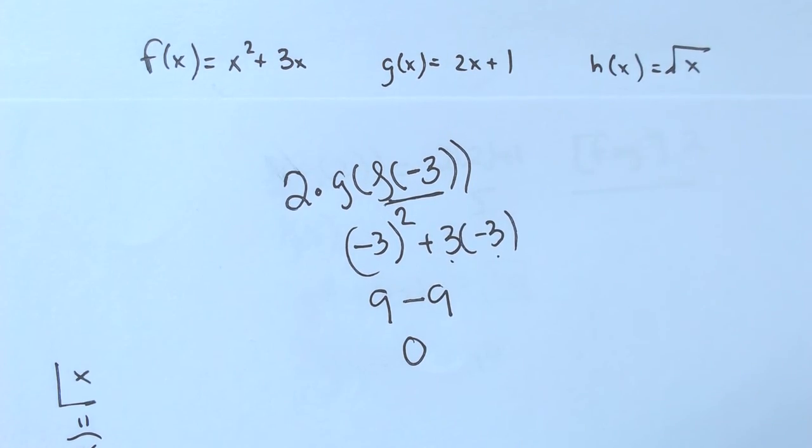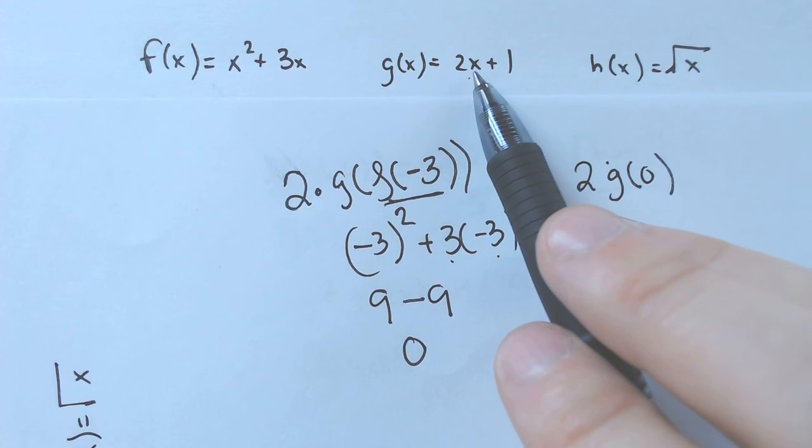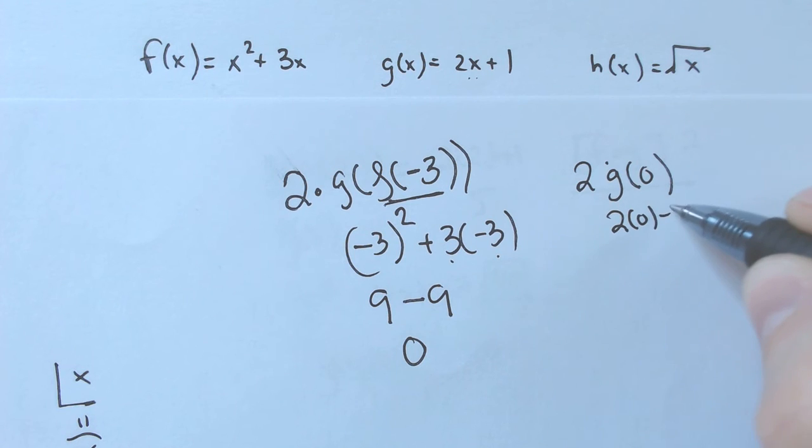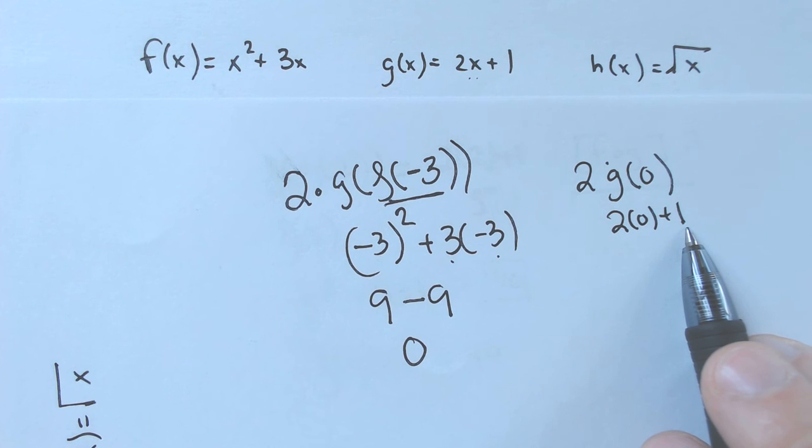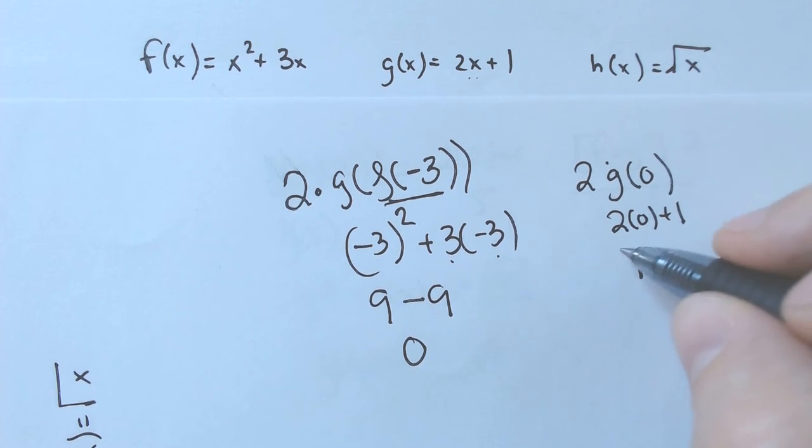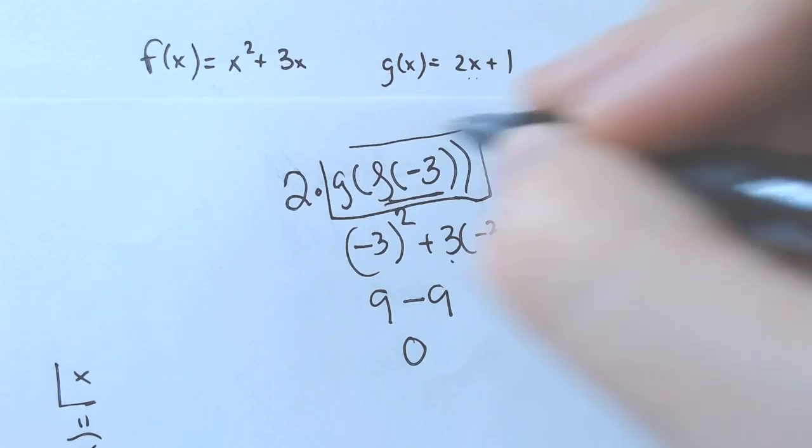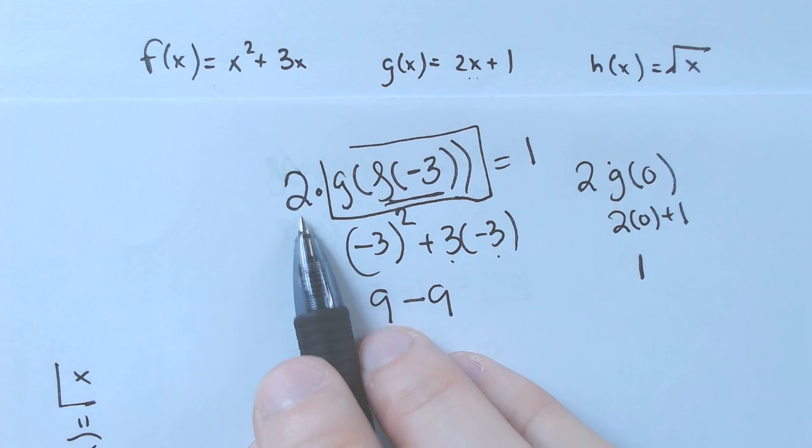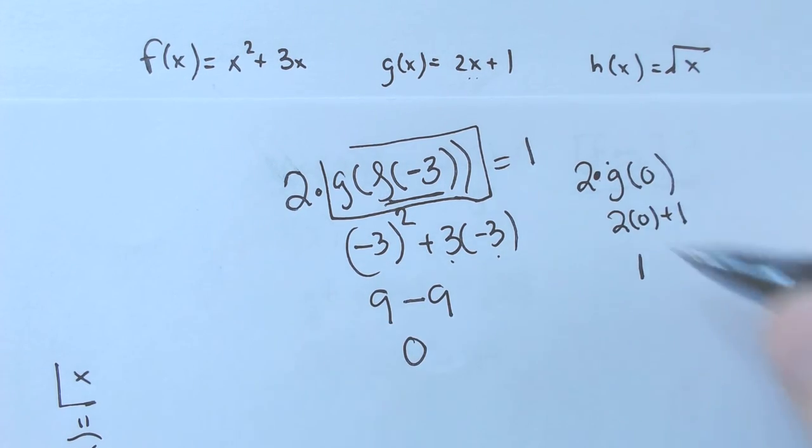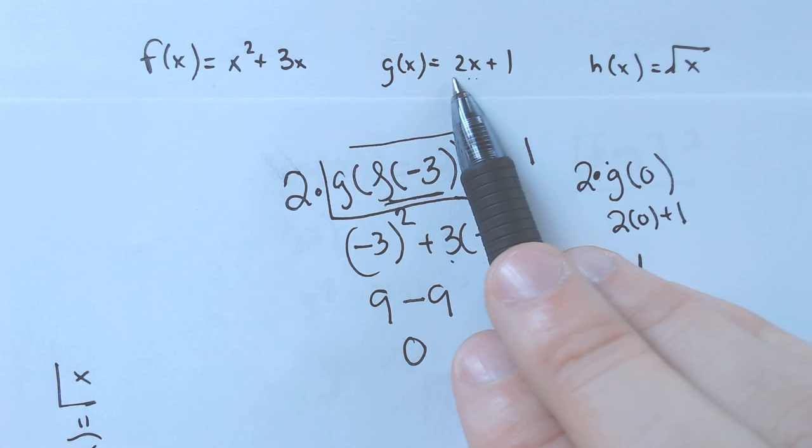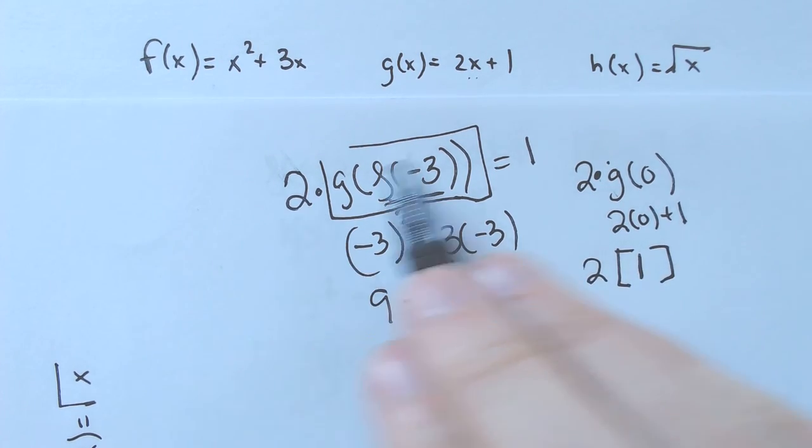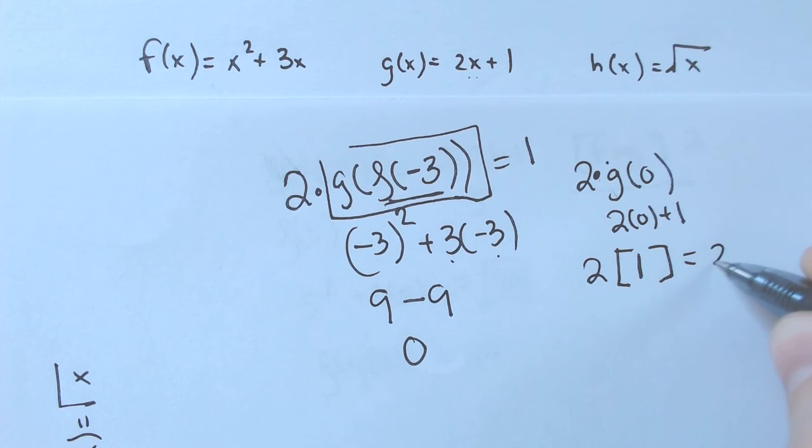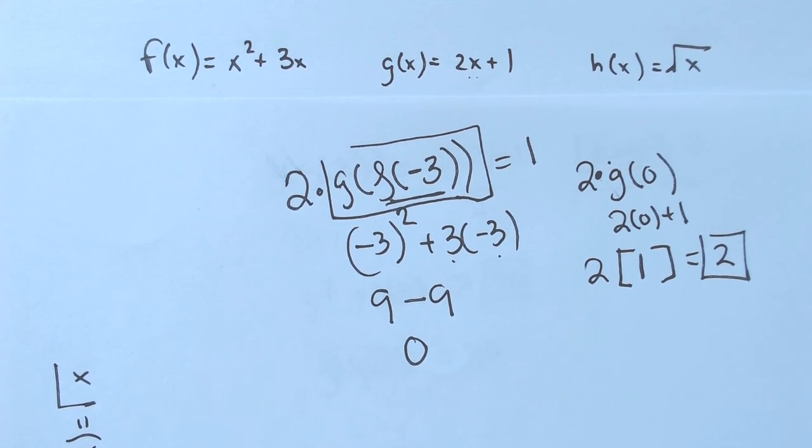We got 0 from the f of negative 3. 2 times g of 0 means we plug in 0. That would be 2 times 0 plus 1, which ends up being 1, because 2 times 0 is 0, plus 1 is 1. That means everything here equaled 1, but then there's still this times 2. I did not deal with the times 2 yet, because the only times 2 I did was here, but that wasn't the same thing as the 2 in front. So this 1 gets multiplied by the 2 that I have been forgetting about this whole time. And 2 times 1, of course, is 2.